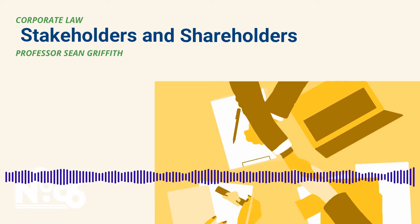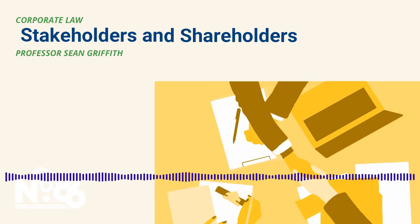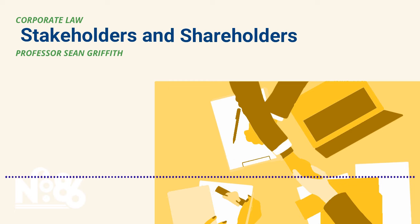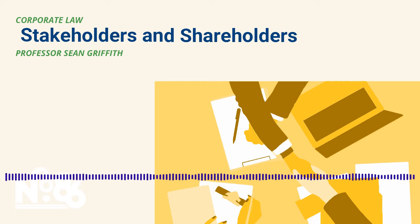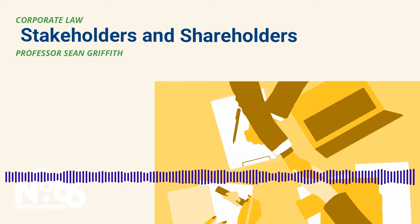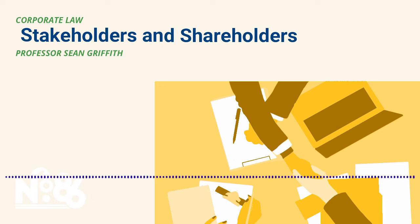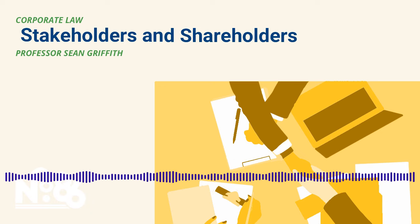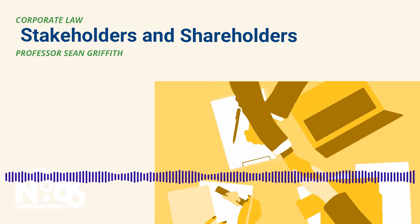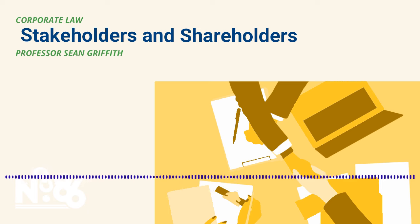Thanks for joining this episode of the Number 86 Lecture Series, where we discuss basic principles and applications of corporate law along with landmark cases. Today's episode features Sean J. Griffith, who holds the T.J. Maloney Chair in Business Law at Fordham University School of Law. Professor Griffith is also the director of the Fordham Corporate Law Center. The Federalist Society takes no position on particular legal or public policy issues; all expressions of opinion are those of the speaker.